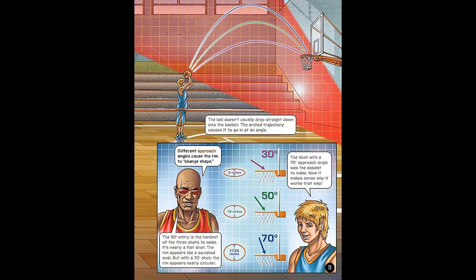The ball doesn't usually drop straight down into the basket. The arched trajectory causes it to go in at an angle. Different approach angles cause the rim to change shape. The 30-degree entry is the hardest of the three shots to make — it's nearly a flat shot, and the rim appears like a squished oval. But with a 70-degree shot, the rim appears nearly circular, making it the easiest shot to make.